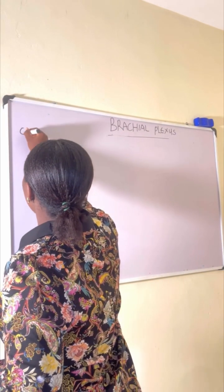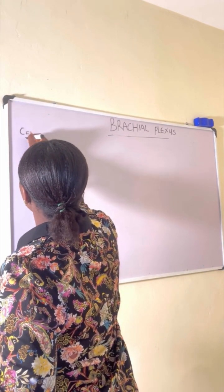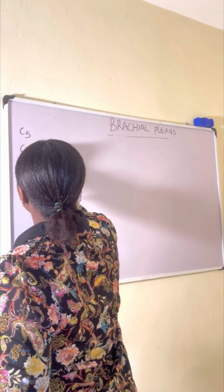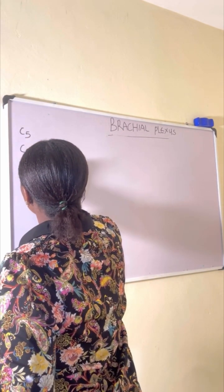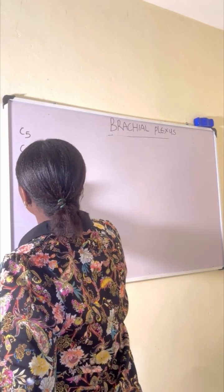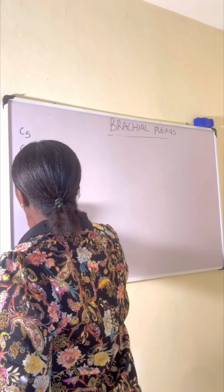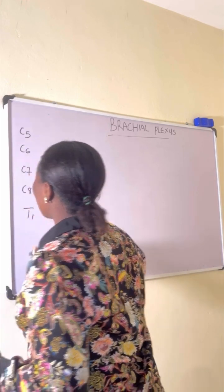The first rules we are looking at involve C5, C6, C7, C8, and C1.